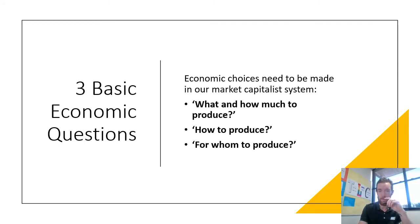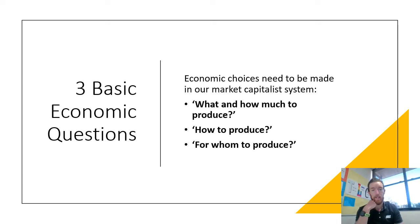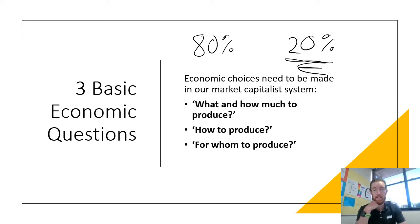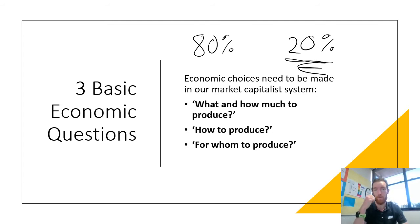Three basic economic questions. Economic choices need to be made in our market capitalist system. A market capitalist system is basically where the free market owns or allocates 80 percent of resources and the government allocates the other 20 percent. It's really important that government allocates 20 percent of resources because there are certain types of production that wouldn't be created if the government didn't provide them for the economy.